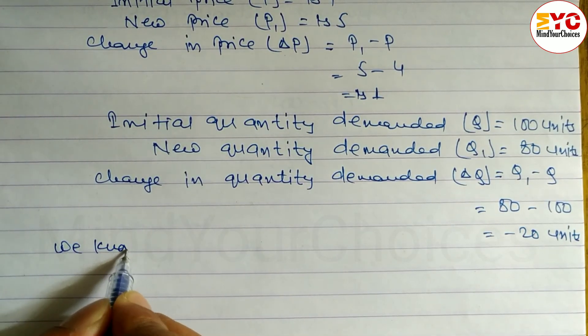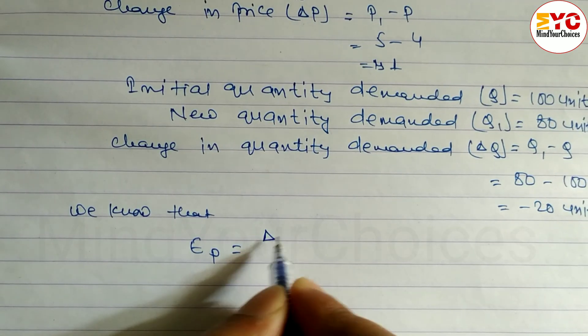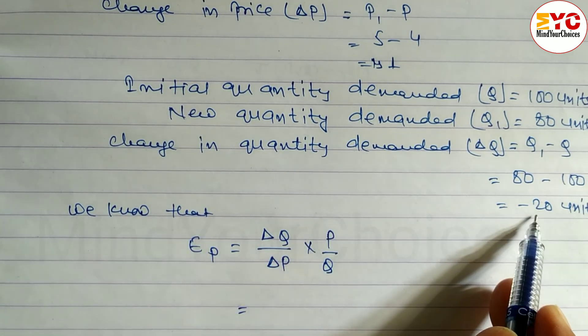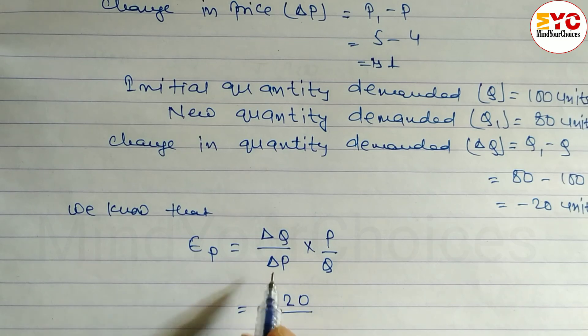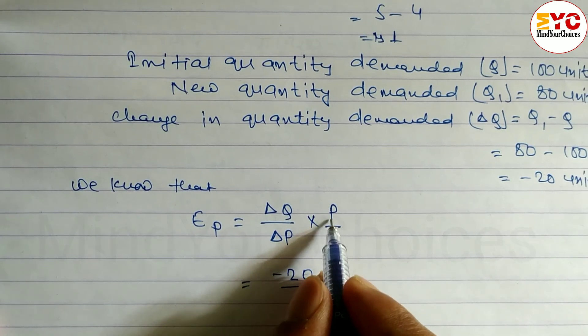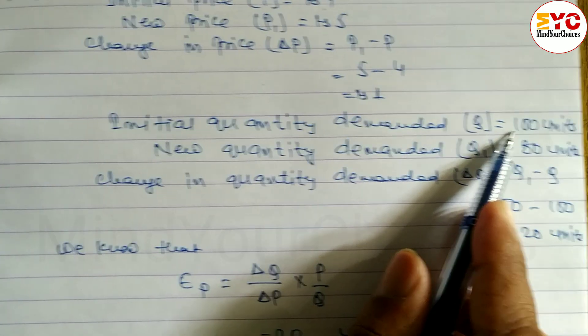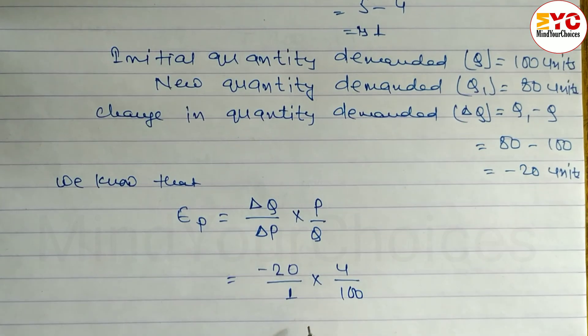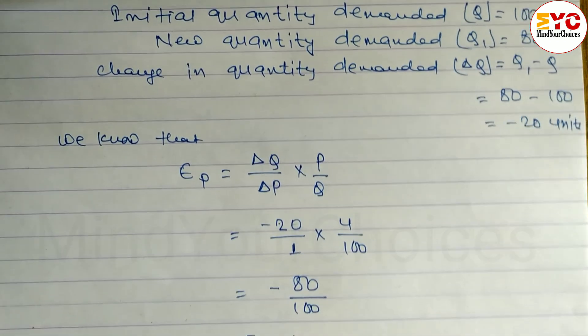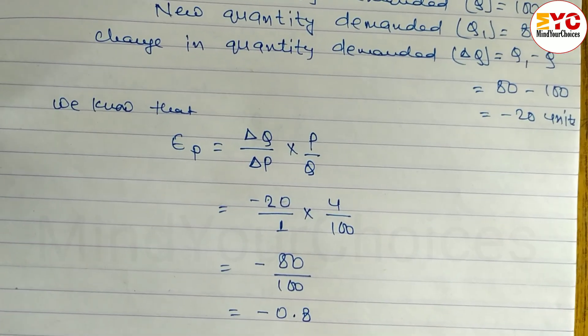We know that the formula for price elasticity of demand (Eₚ) is: ΔQ/ΔP × P/Q. Substituting the values: minus 20 divided by 1, times 4 divided by 100, equals minus 80 divided by 100, equals minus 0.8. So the price elasticity of demand is minus 0.8.